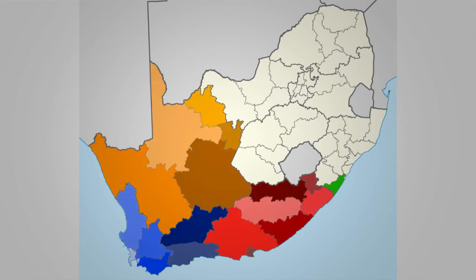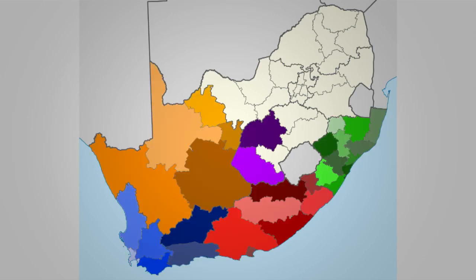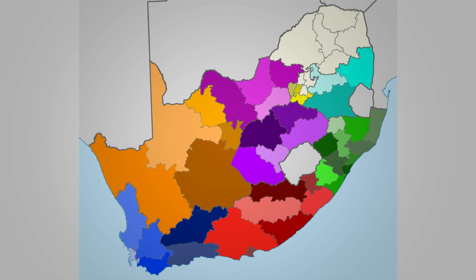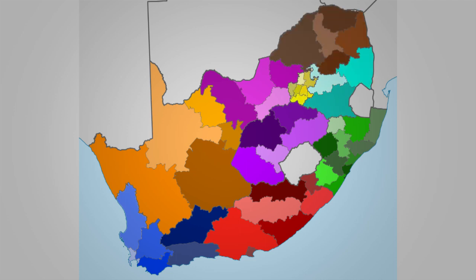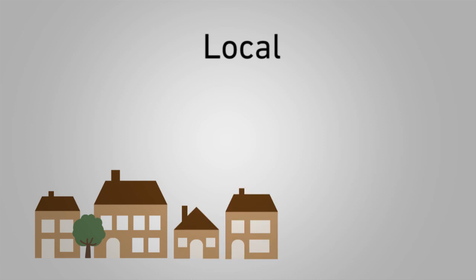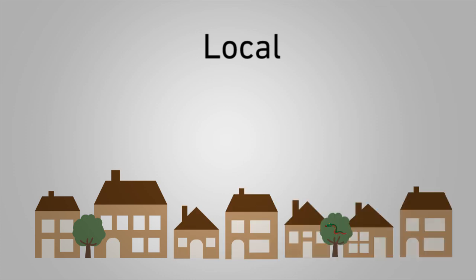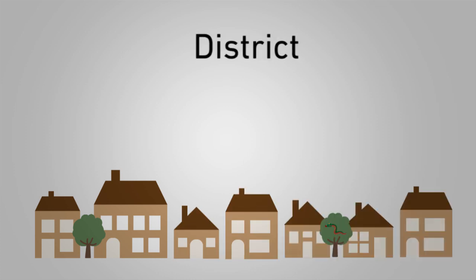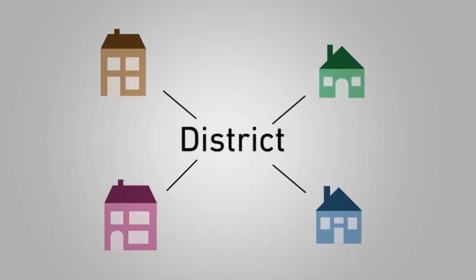Local government in South Africa is made up of municipalities which are run by councils. There are three kinds of municipalities: metropolitan, which are big cities; local, which are towns and rural areas; and district, which coordinate local municipalities in the region.